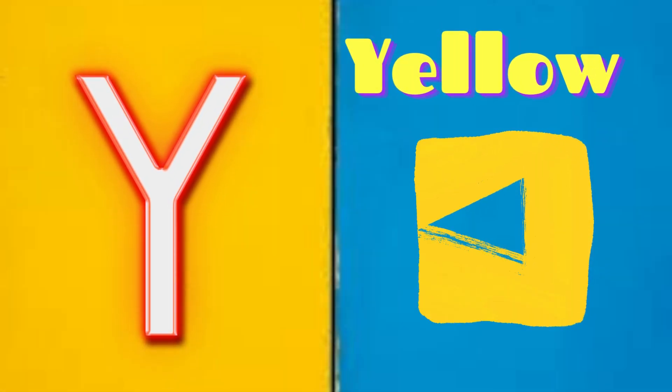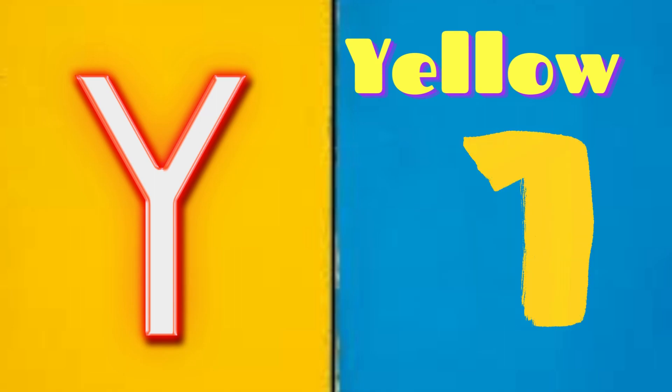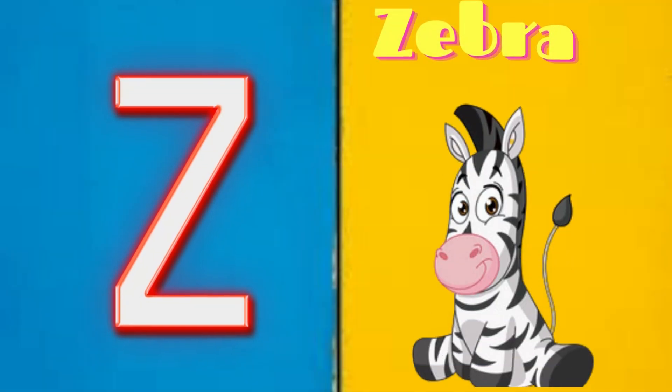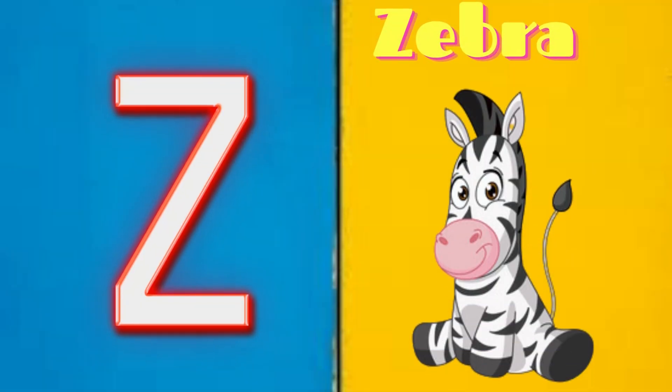Y is for yellow, y-y-yellow. Z is for zebra, z-z-zebra.